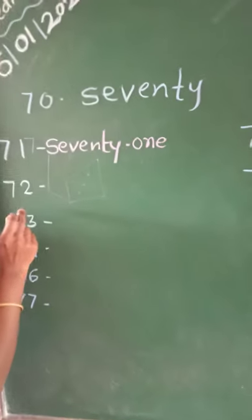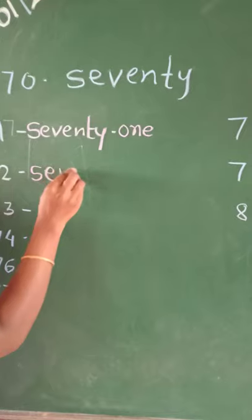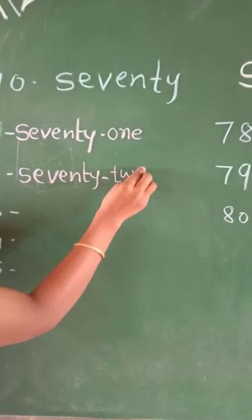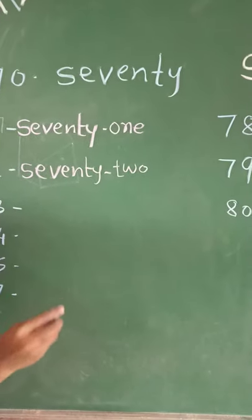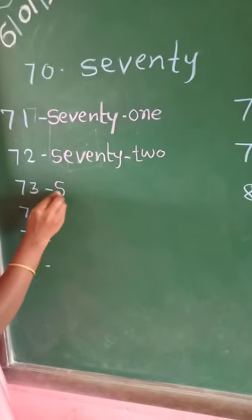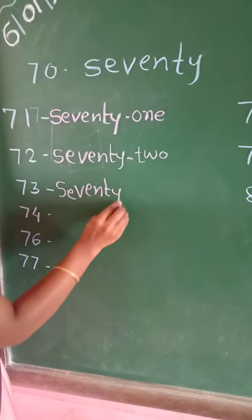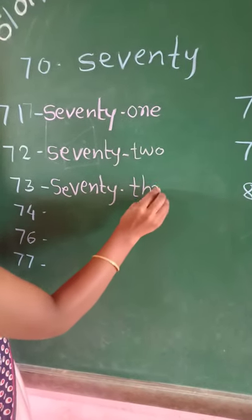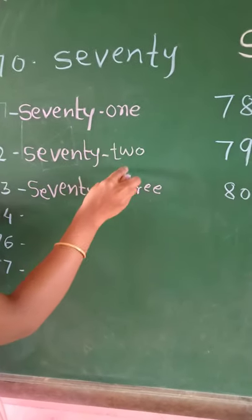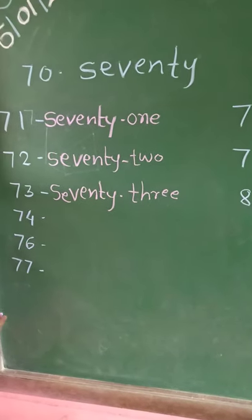Then, after 71, which number comes? 72. So: S-E-V-E-N-T-Y, 70, T-W-O, 2 — seventy-two, 72. Then 73: spelling of 70 is S-E-V-E-N-T-Y, then T-H-R-E-E, 3 — seventy-three, 73. See here: 1, 2, 3 — this spelling helps us to write other number spellings.